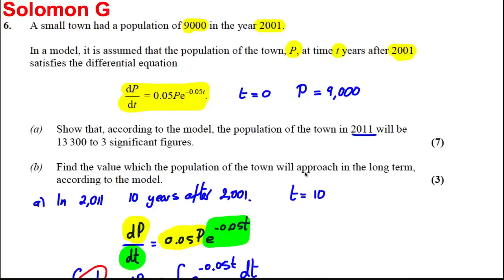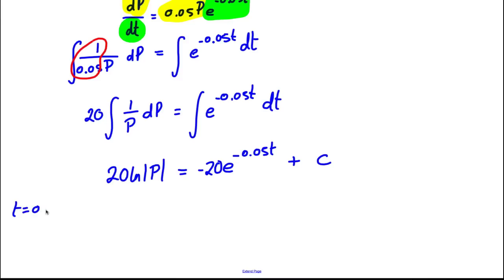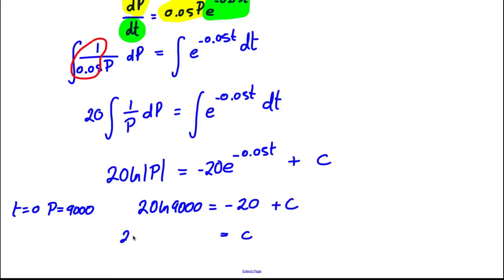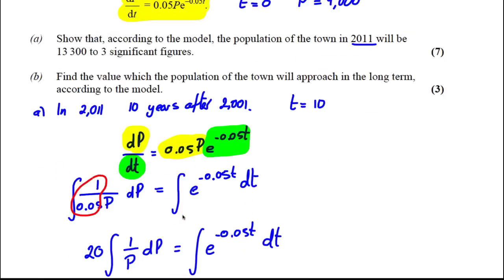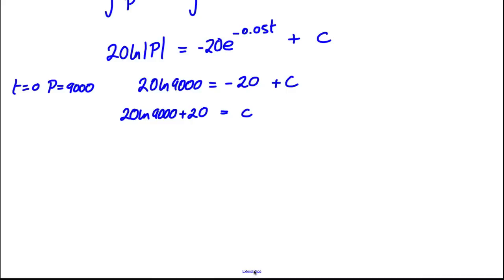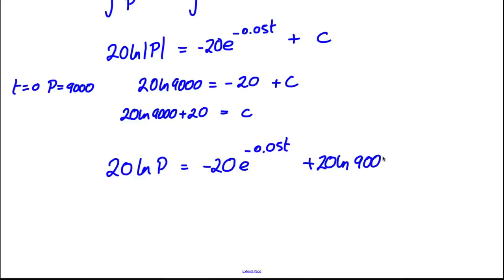Now to find the constant: when T equals 0, P equals 9,000. So therefore 20 ln 9000 equals e to the power of 0, which is 1, times negative 20 plus C. Therefore C is equal to 20 ln 9000 plus 20. So our equation is 20 ln P equals negative 20e to the negative 0.05T plus 20 ln 9000 plus 20.